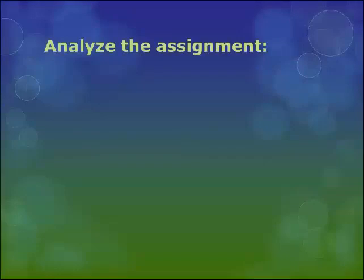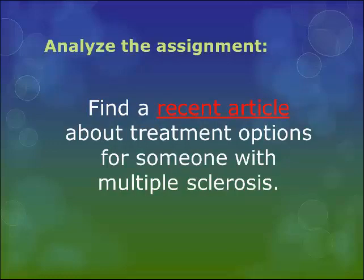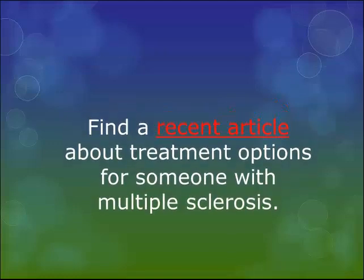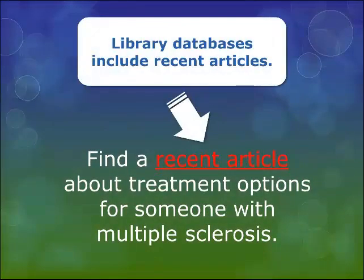Searching for articles really starts with analyzing your assignment. Here is an example. Suppose that you have to find a recent article about treatment options for someone with multiple sclerosis. Depending on the topic you choose, you will be able to find very recent articles using a library database.